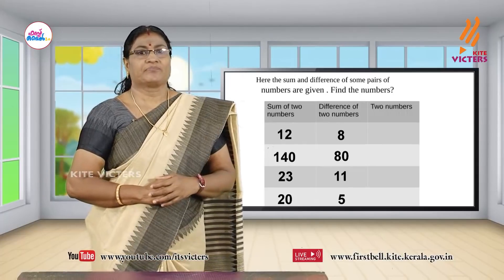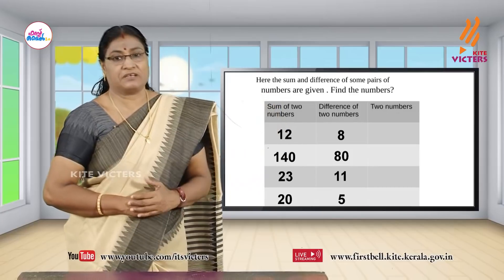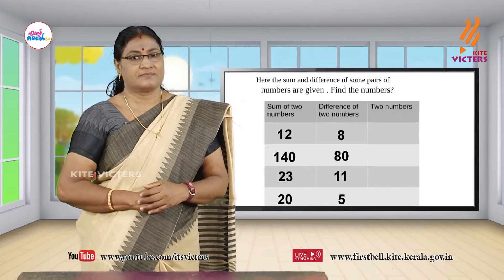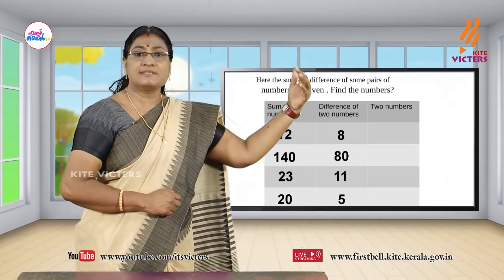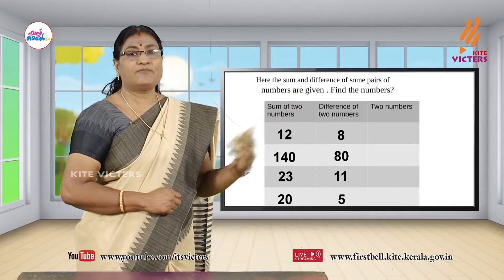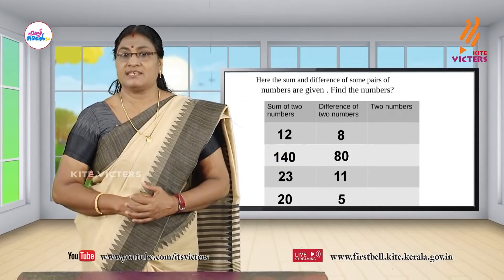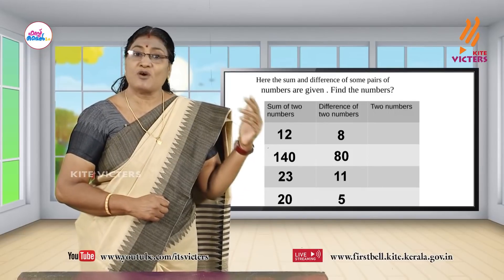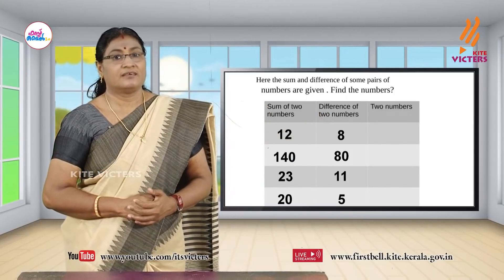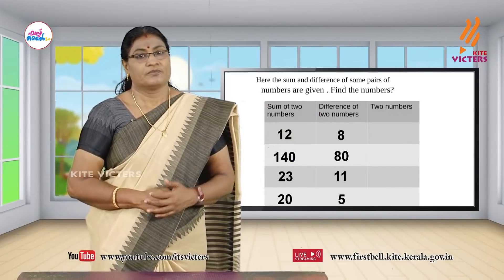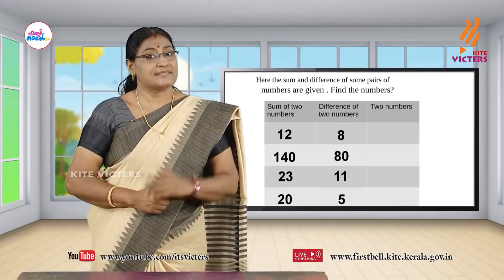Look at the screen. The sum and difference of some pairs of numbers are given and you have to find the numbers. First: sum is 12, difference is 8. Second: sum is 23, difference is 14. Third: sum is 23, difference is 11. You can find the numbers quite easily. Do all of this and send it to your teacher.